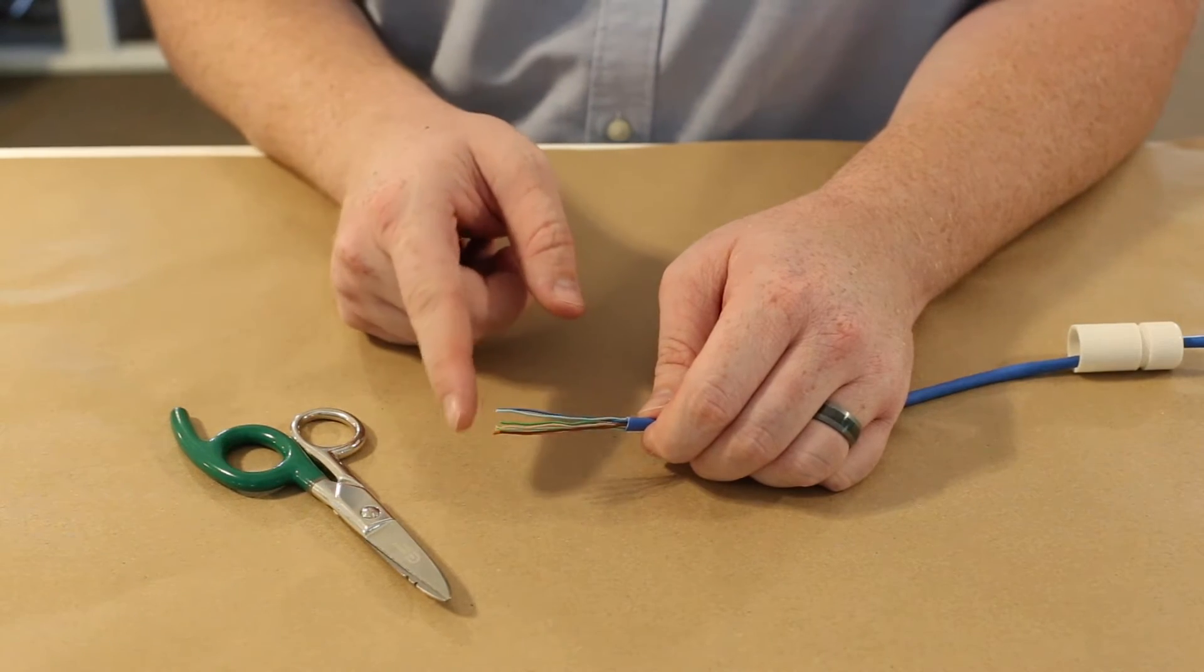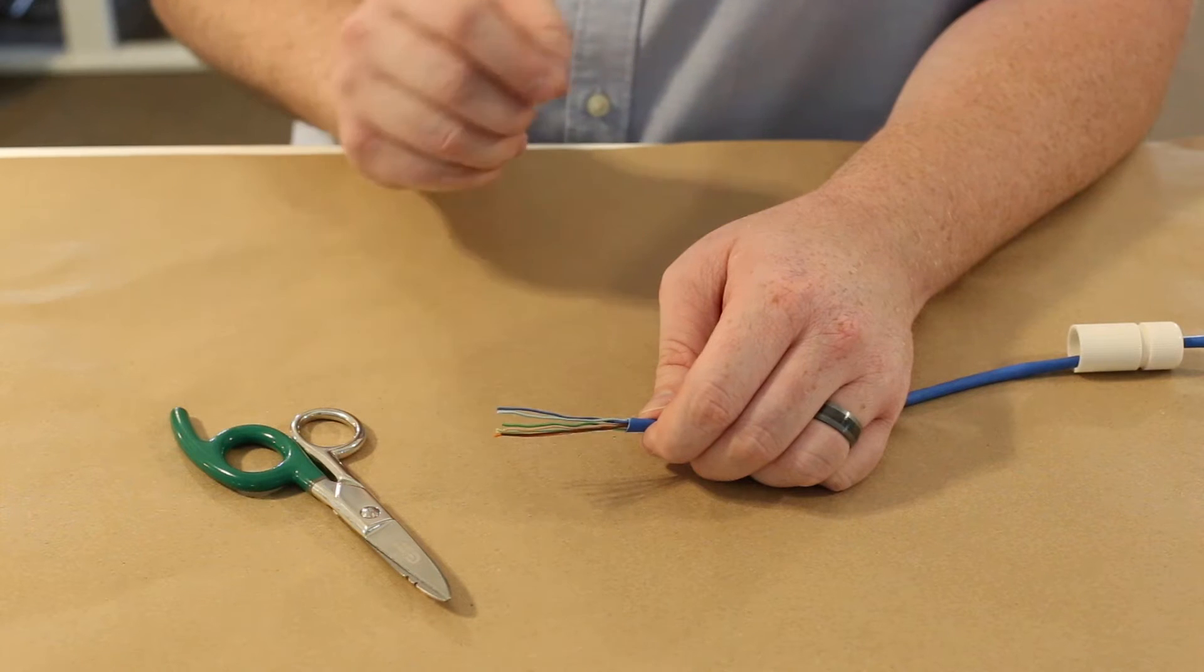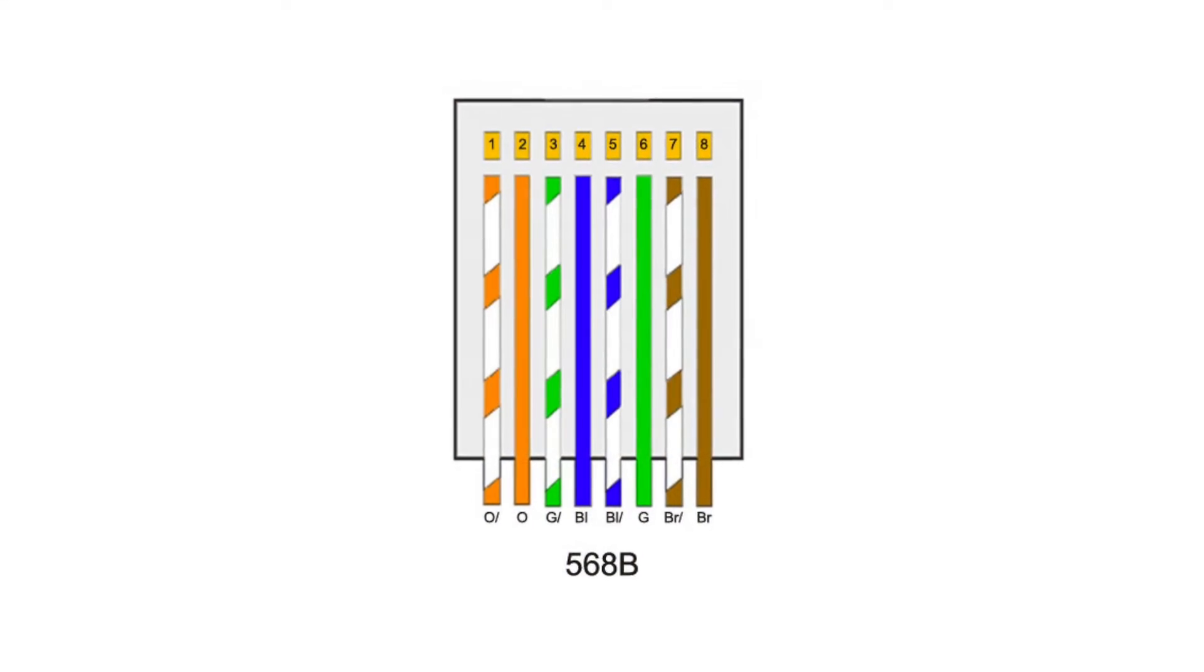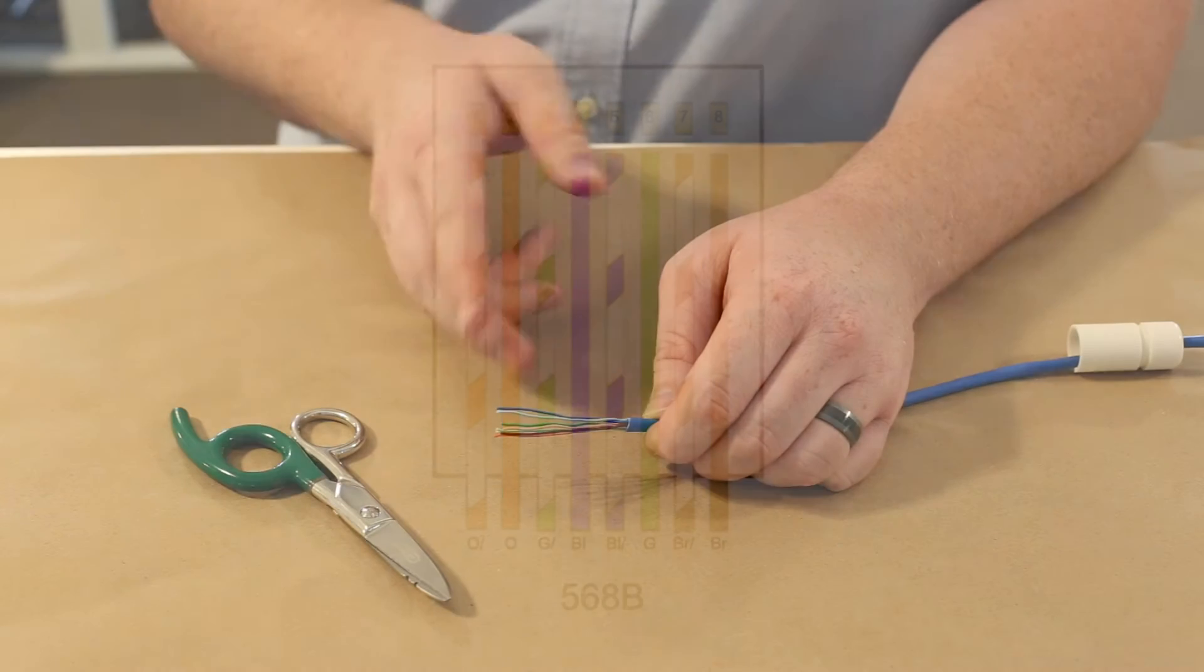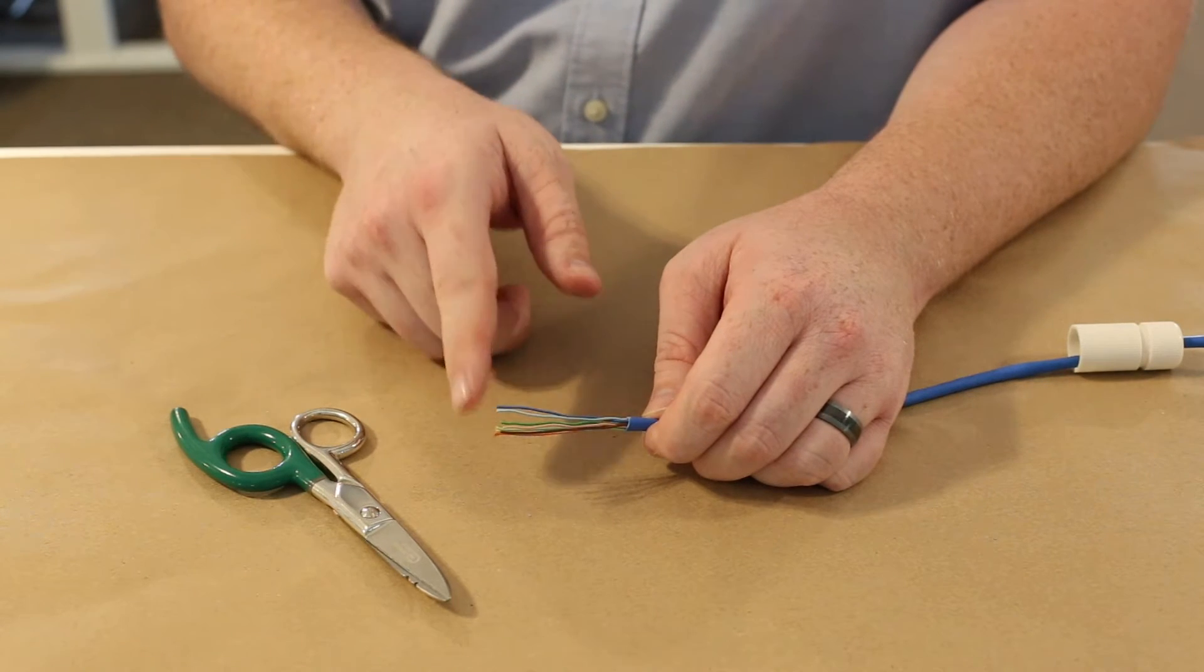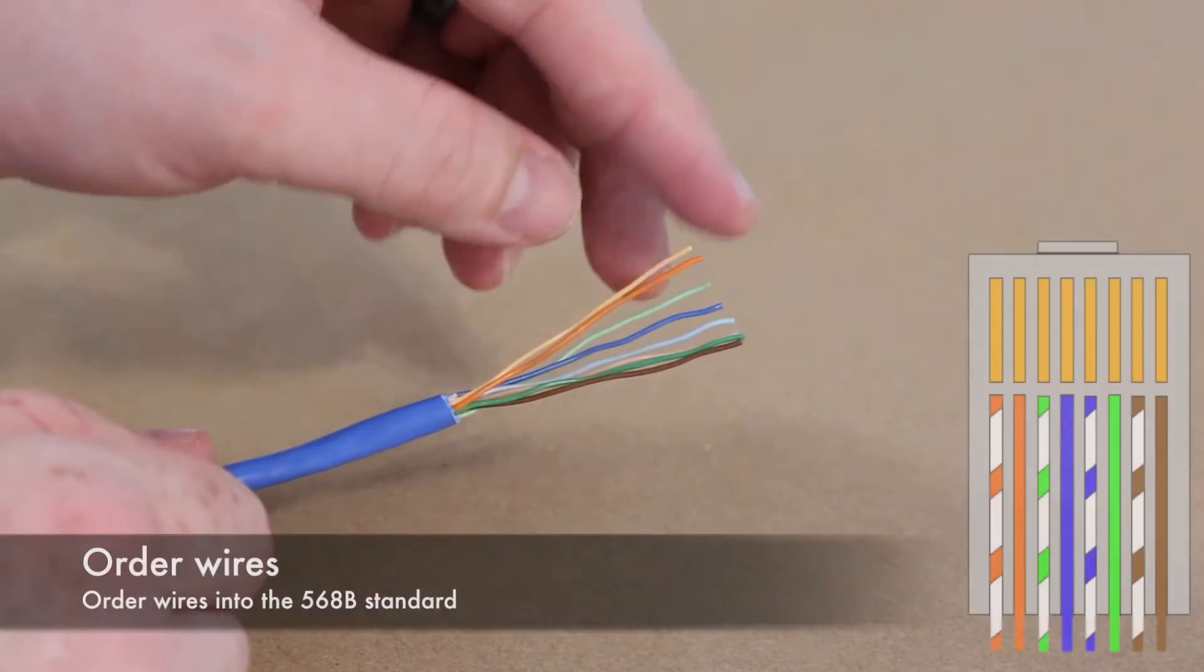Next we're going to put the wires in the correct order. We're going to use the 568B wiring order. This is required for data connections. If you get the wires crossed up or use a different type of wiring order this will cause issues with your data connections.